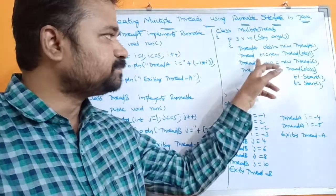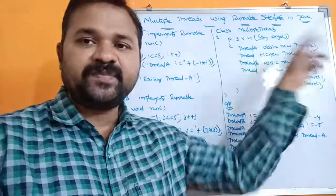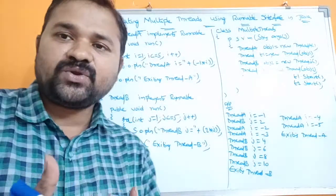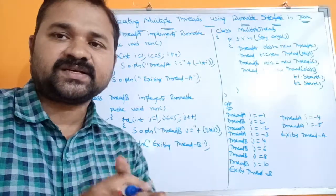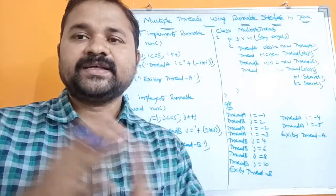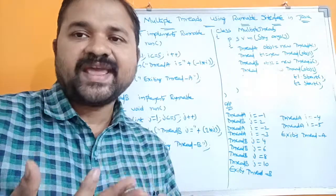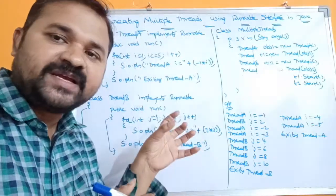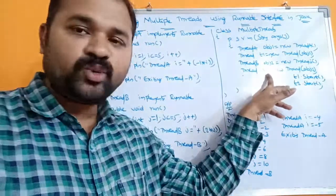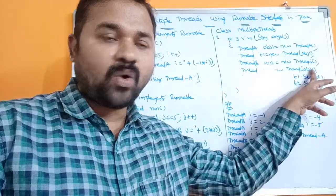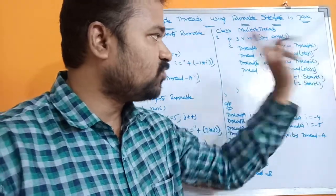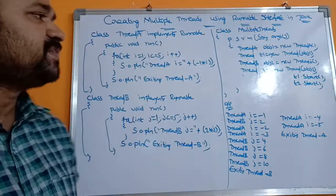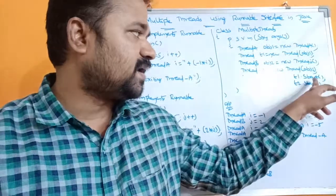ThreadB obj2 = new ThreadB(). Since the Runnable interface doesn't know about the run method — the run method definition is present in the Thread class — we create an object for the Thread class passing this class object as the parameter: Thread t2 = new Thread(obj2). Next, in order to start the execution of the run method we call the start method.